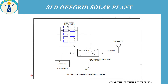In this picture you can see an off-grid type solar power plant of 3.2 kilowatt peak. It is a very small unit of a solar power plant being installed in a residential area. Here we have connected 10 numbers of 320 watt peak solar panels, and these solar panels are connected in series as well as parallel.